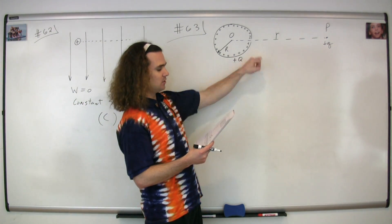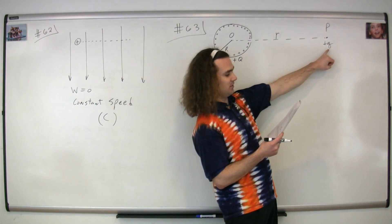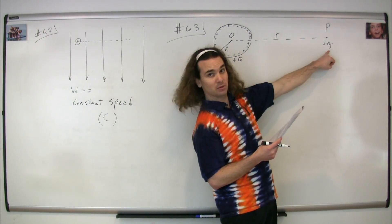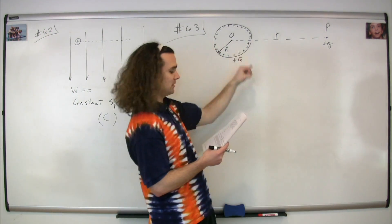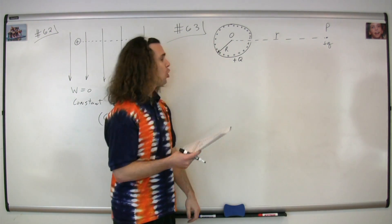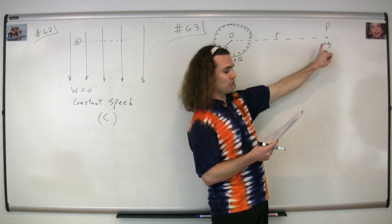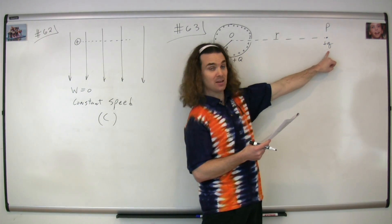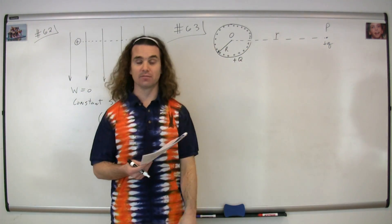There is a small hole in the sphere. A small charge positive little q is initially located at point P, a distance little r from the center of the sphere. What work must be done by an external agent to move this charge from here all the way to the center of the sphere?